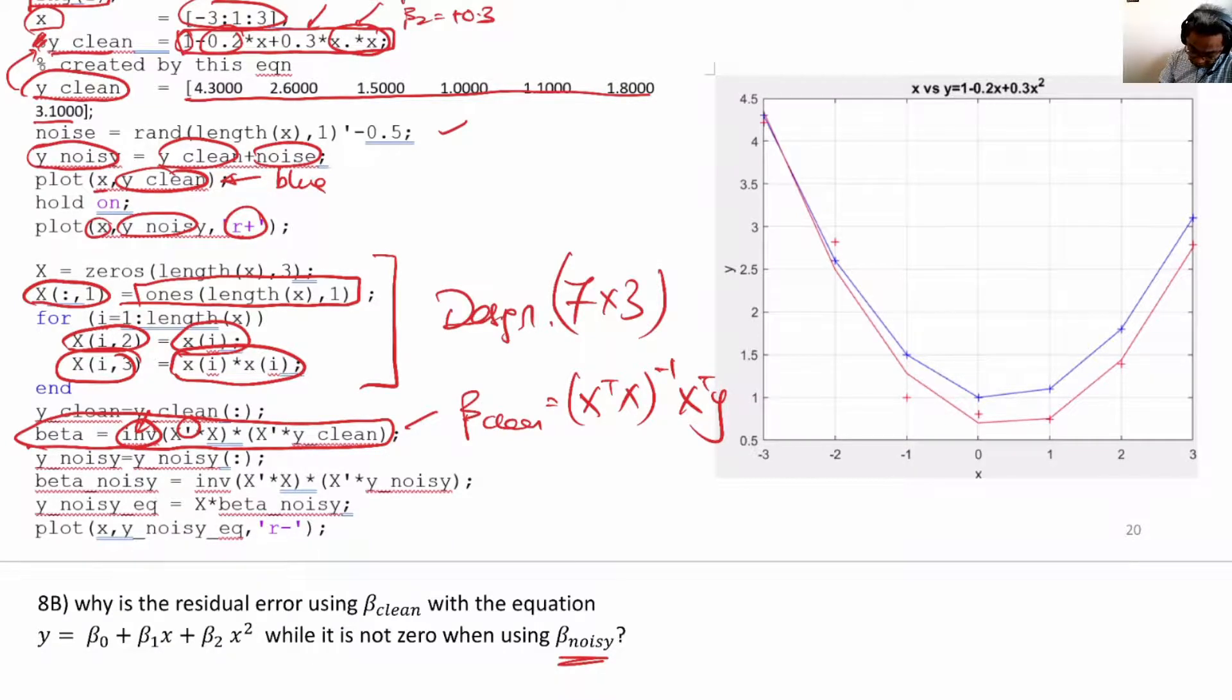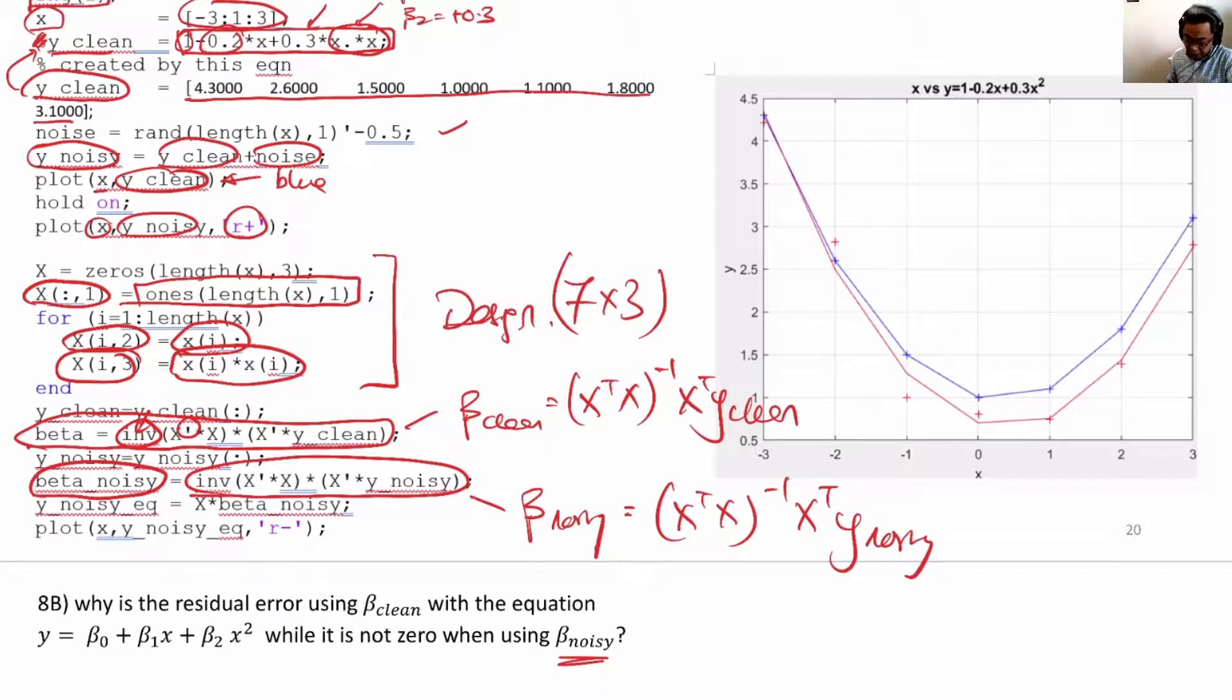β_noisy is here. This is the equation. β_noisy is different from β_clean only by x transpose x inverse x transpose y_noisy. On top is y_clean, the bottom is y_noisy.